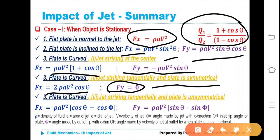Next case: plate is curved and unsymmetrical, wherein the jet strikes the plate tangentially. Then Fx is equal to rho·a·v²·(cos θ + cos φ). We found out there will be two angles making with the horizontal axis — at inlet it is theta, and while leaving the plate after gliding over it, it will be phi. Therefore Fx equals rho·a·v²·(cos θ + cos φ), whereas Fy, normal to the jet, is equal to rho·a·v²·(sin θ − sin φ).